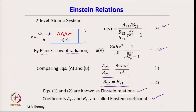For the given two-level system, at frequency ν, this system acts as a blackbody since radiation at this frequency can be absorbed or emitted. Therefore U_nu is the same as blackbody radiation at that frequency. Comparing the two expressions: A21/B21 = 8πhν³/c³ and B12 = B21.